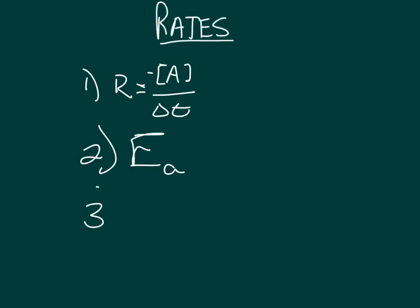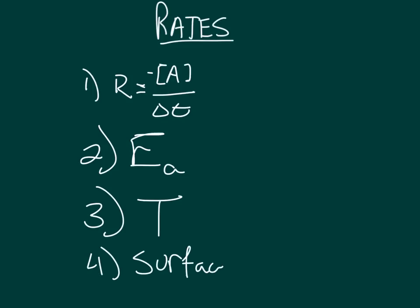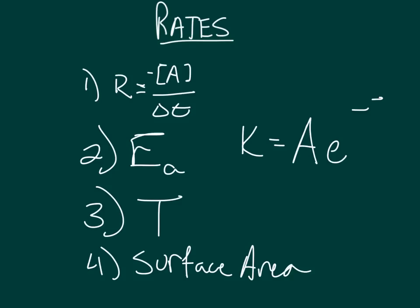Third is temperature. The higher the temperature, the faster the rate. Surface area of solids is also important to consider. All of these are illustrated through the Arrhenius equation. The rate constant k increases when activation energy decreases, and it increases when temperature increases. Notice that the exponent is negative, so the closer to zero it is, the greater the rate constant.